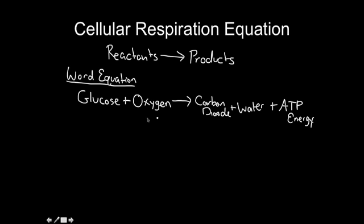If you know your equation for photosynthesis, all you have to do is flip the equation, don't put light over the arrow, and add ATP energy to the end. That's why I told you when we were learning the photosynthesis equation: if you know photosynthesis, you can answer almost any question about photosynthesis, and it makes the cellular respiration equation easier. Flip your photosynthesis equation, get rid of the light, add ATP energy to the end, and you have your equation for cellular respiration.